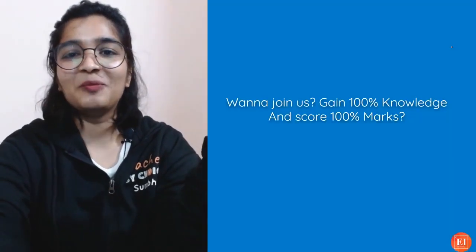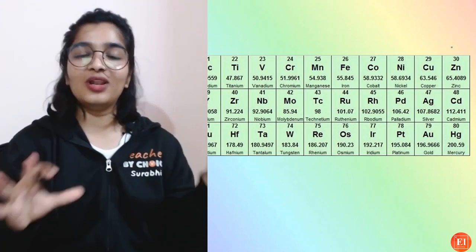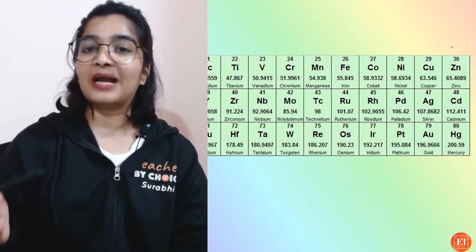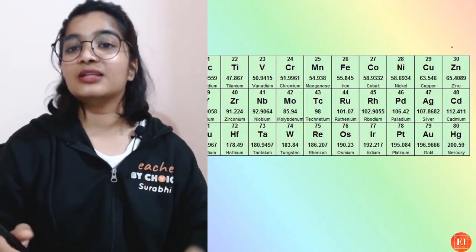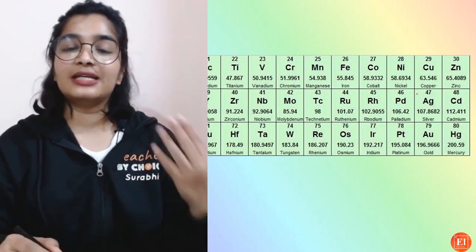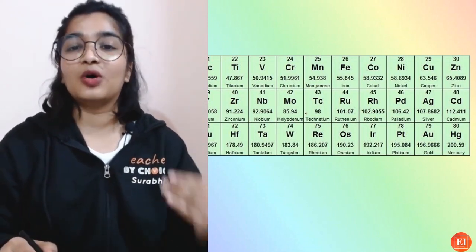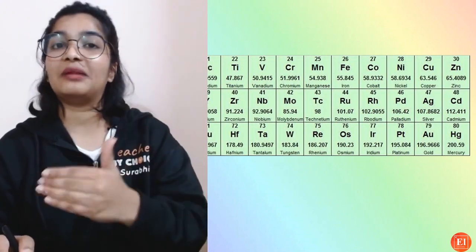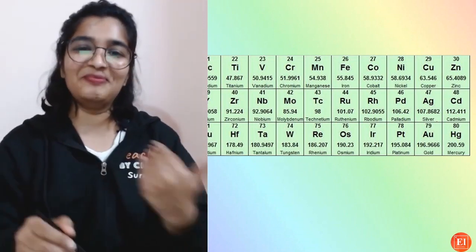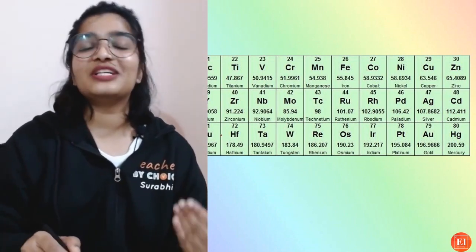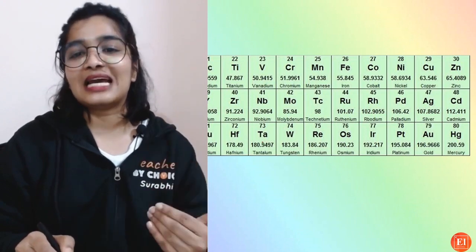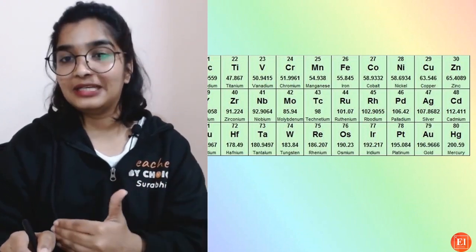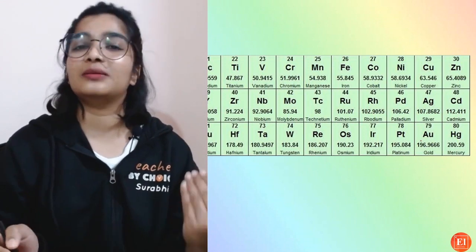I hope you enjoyed it! So this is the whole d-block elements list: Scandium, Titanium, Vanadium, Chromium, Manganese, Iron, Cobalt, Nickel, Copper, Zinc; then Yttrium, Zirconium, Niobium, Molybdenum, Technetium, Ruthenium, Rhodium, Palladium, Silver, Cadmium; then Lutetium, Hafnium, Tantalum, Tungsten, Rhenium, Osmium, Iridium, Platinum, Gold, Mercury.